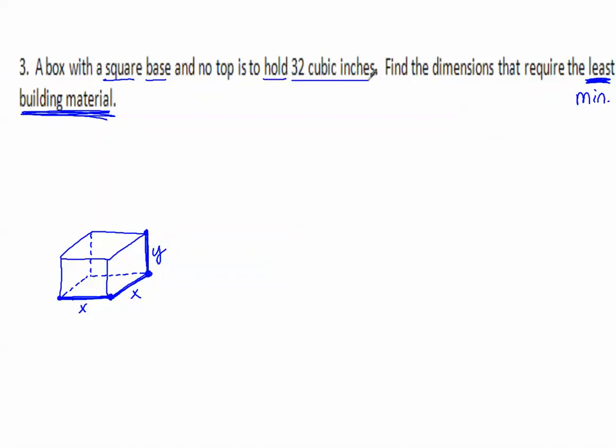It says it's holding 32 cubic inches. Cubic units is a measurement of volume. So I know the volume of this box is 32. Volume of a rectangular prism is length times width times height. Using the variables from our picture: X squared times Y is 32. There's a relationship between X and Y that can help me find the minimum building material. The building material is what I use to build it - the surface areas put together.